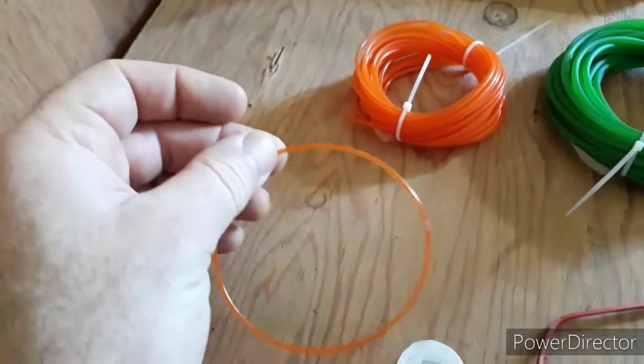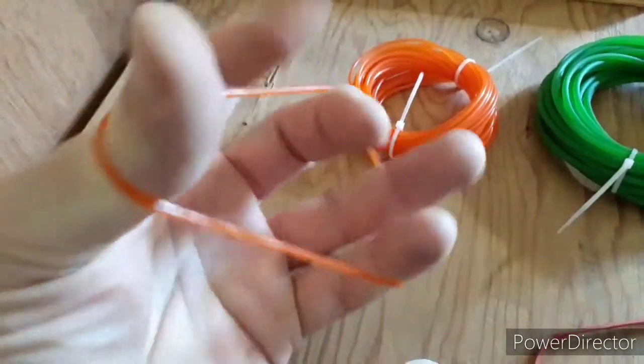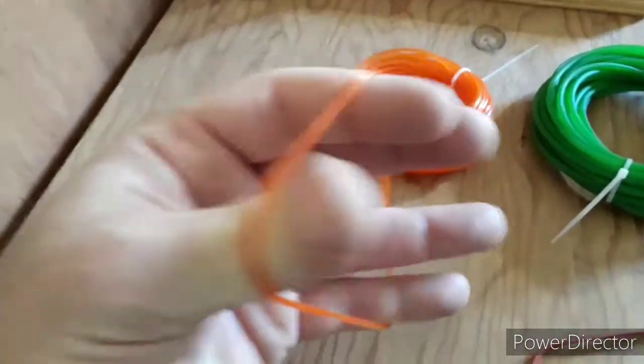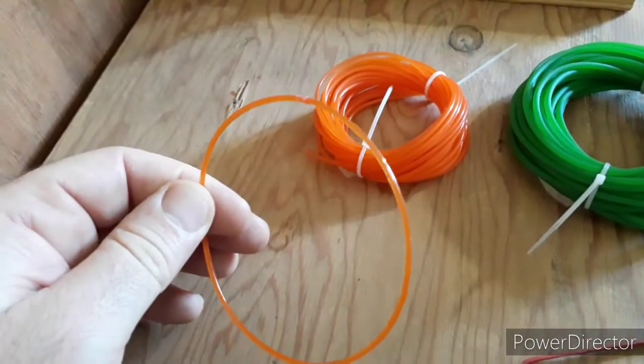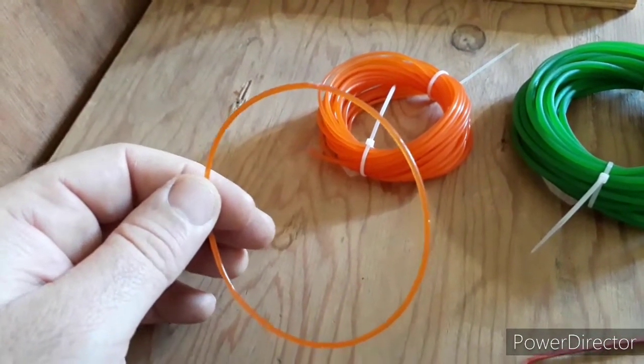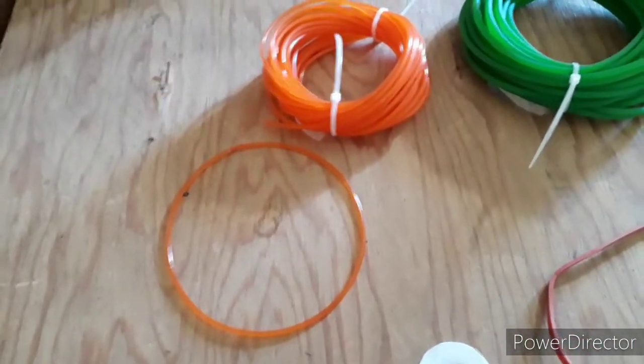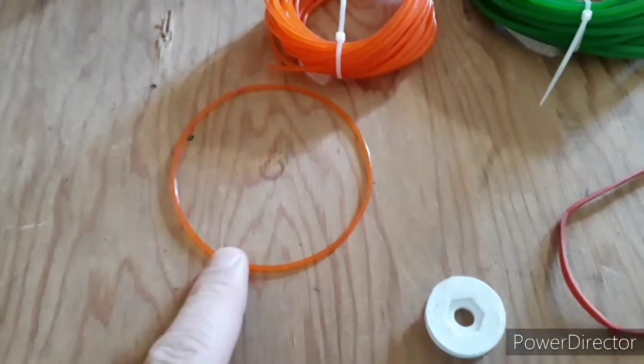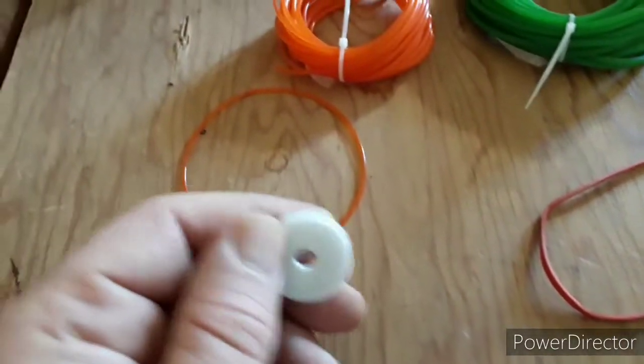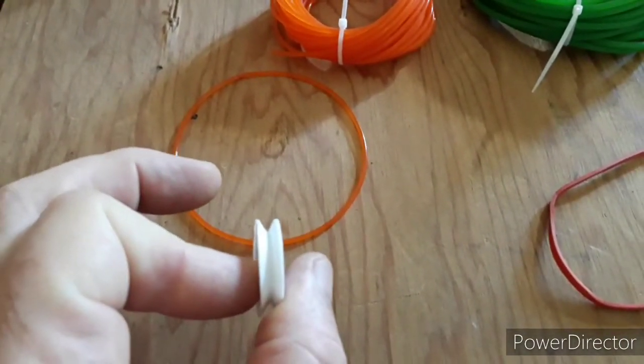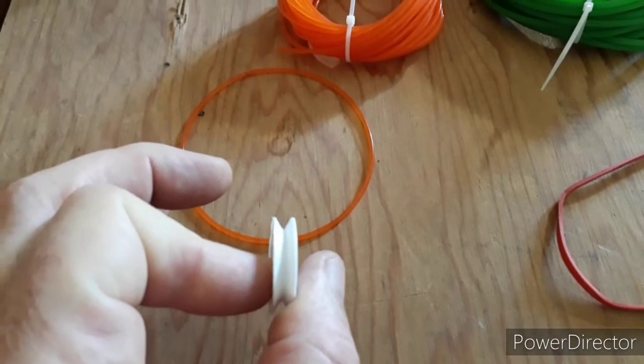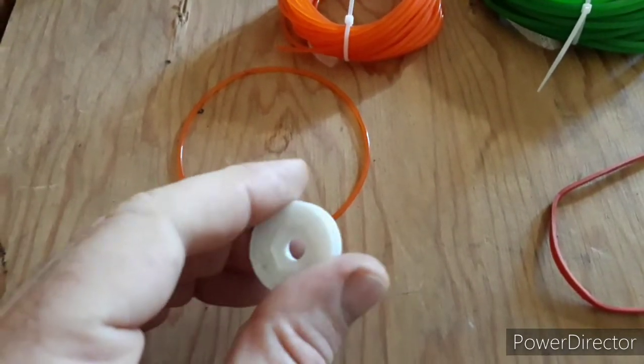On the first try it succeeded, and this thing is surprisingly durable at the weld. It's not really going to break at the weld. The interesting thing is you can make any size belt you like, and when you print a v-profile pulley, this works really well.